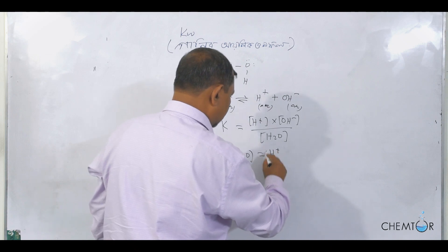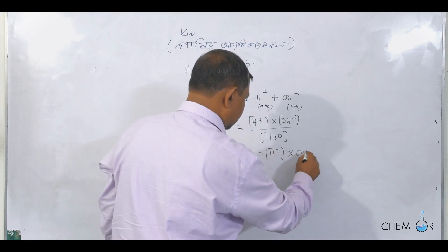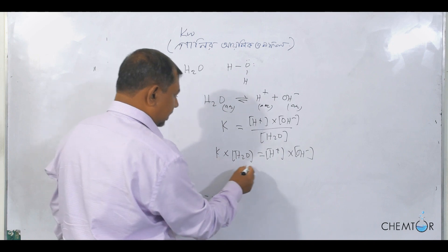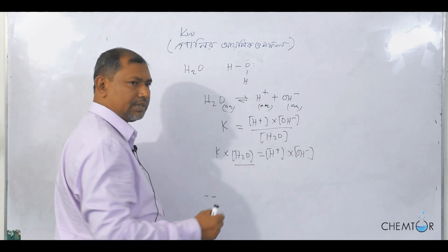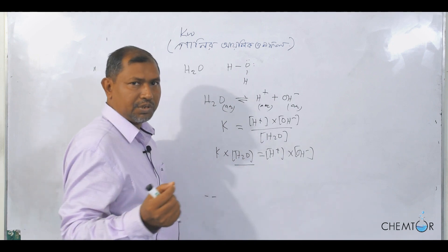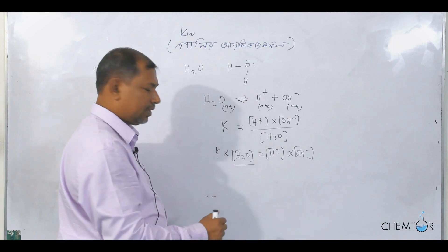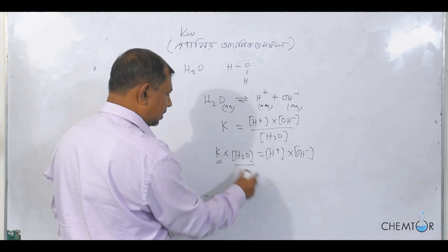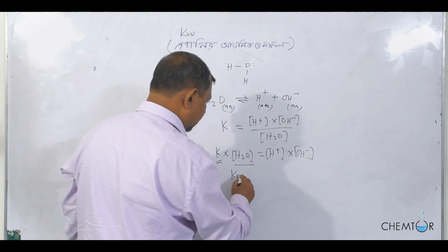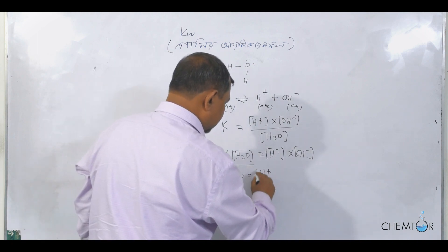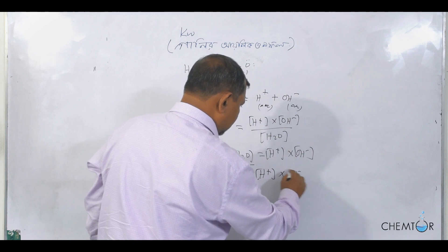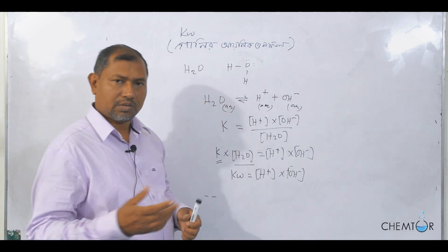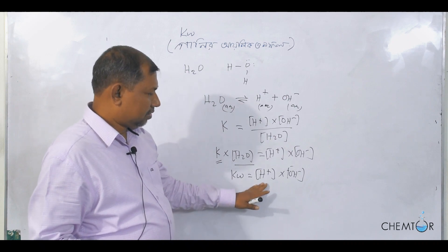We can have hydrogen, and hydroxide is in the same place. This is a constant because we have used the constant. In Kw, we have used hydrogen and hydroxide. So, water in equilibrium will give hydrogen and hydroxide.